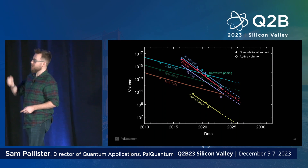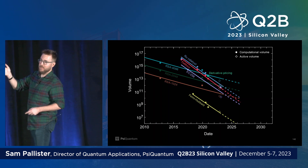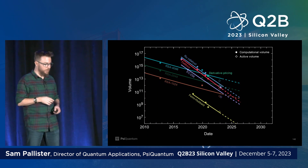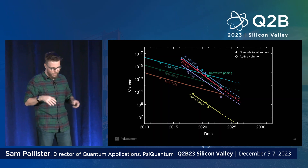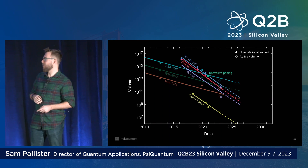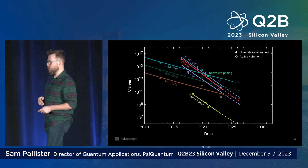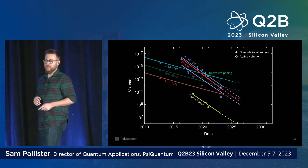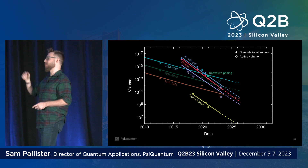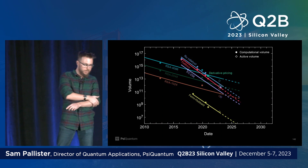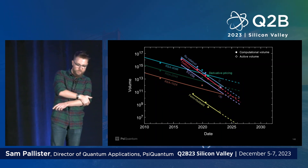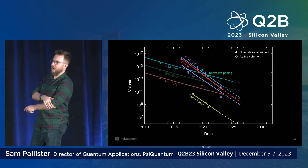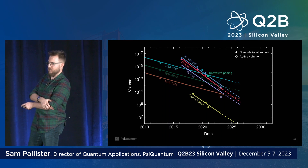Resource counts for algorithms have dropped significantly as a function of time, often by very significant amounts. I've been at PsiQuantum for just over four years, and the field has faithfully dropped common benchmark algorithms — like finding the ground state energy of FeMoco or solving elliptic curve cryptography — by an order of magnitude a year for the last six or seven years.